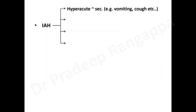Intra-abdominal hypertension is classified as hyperacute, acute, subacute, and chronic. Hyperacute is predominantly physiological with no sustained increase — vomiting, coughing, or other physiological reflexes can lead to a transient rise. Acute IAH evolves over a few hours and can be due to inflammation within the abdomen or over-resuscitation with fluid sequestration in the abdomen or abdominal wall.